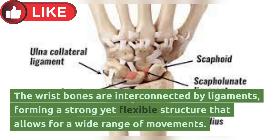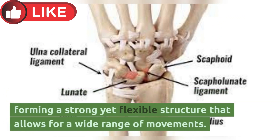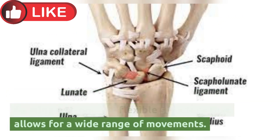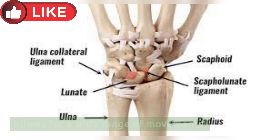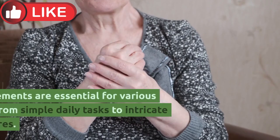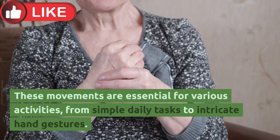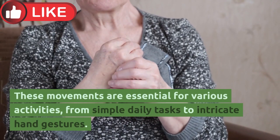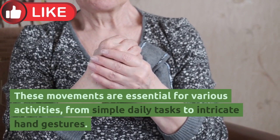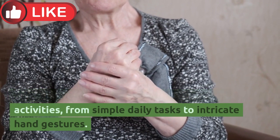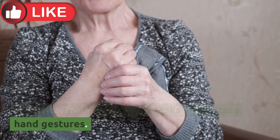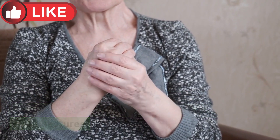The wrist bones are interconnected by ligaments, forming a strong yet flexible structure that allows for a wide range of movements. These movements are essential for various activities, from simple daily tasks to intricate hand gestures.